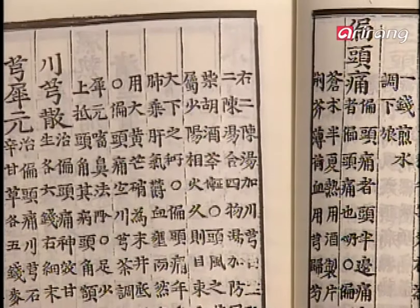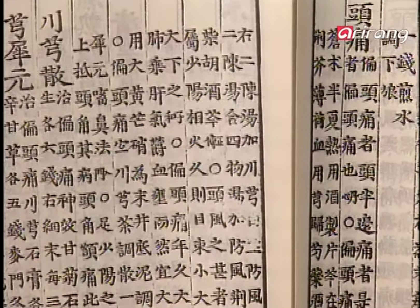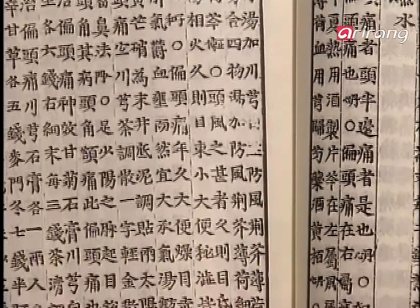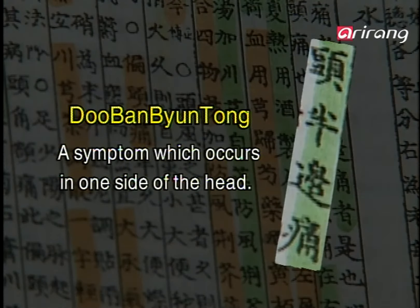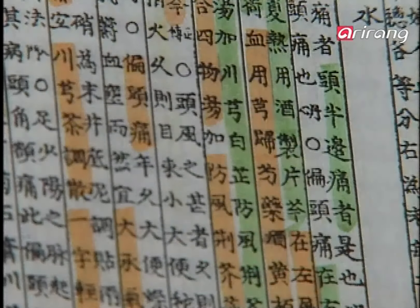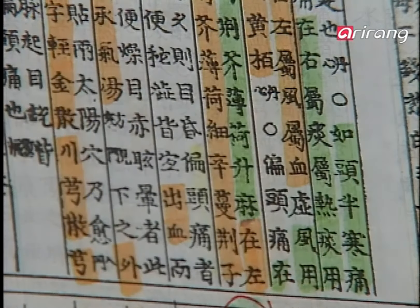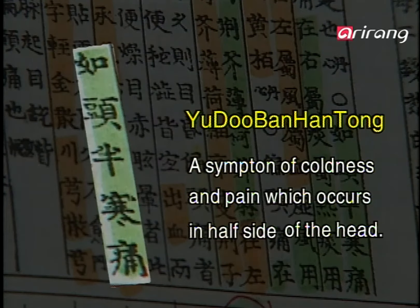Dongyi Bogam writes migraine as dubanbyontong and yodubanantong. Dubanbyontong is a symptom which occurs in one side of the head. Yodubanantong is a symptom of coldness and pain in half side of the head. In the case of migraine, the cause of the pain varies according to the occurrence of the pain.